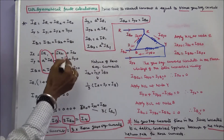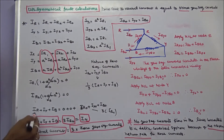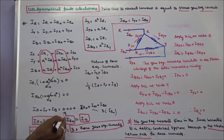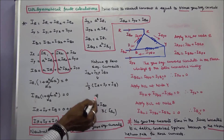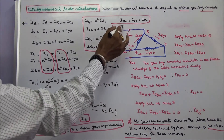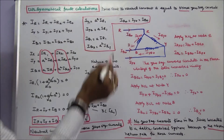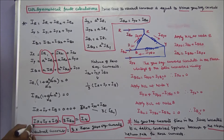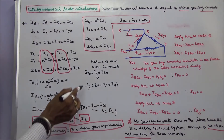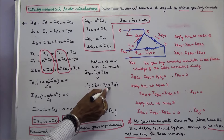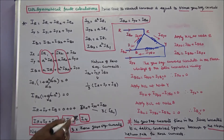Substituting these values, IR plus IY plus IB is equal to IR0 plus IY0 plus IB0. Since IR0 equals IY0 equals IB0, therefore IR plus IY plus IB is equal to 3 times IR0 — that is the neutral current. The zero-sequence current IR0 is equal to one-third times (IR plus IY plus IB), and the neutral current is equal to 3 times the zero-sequence current.